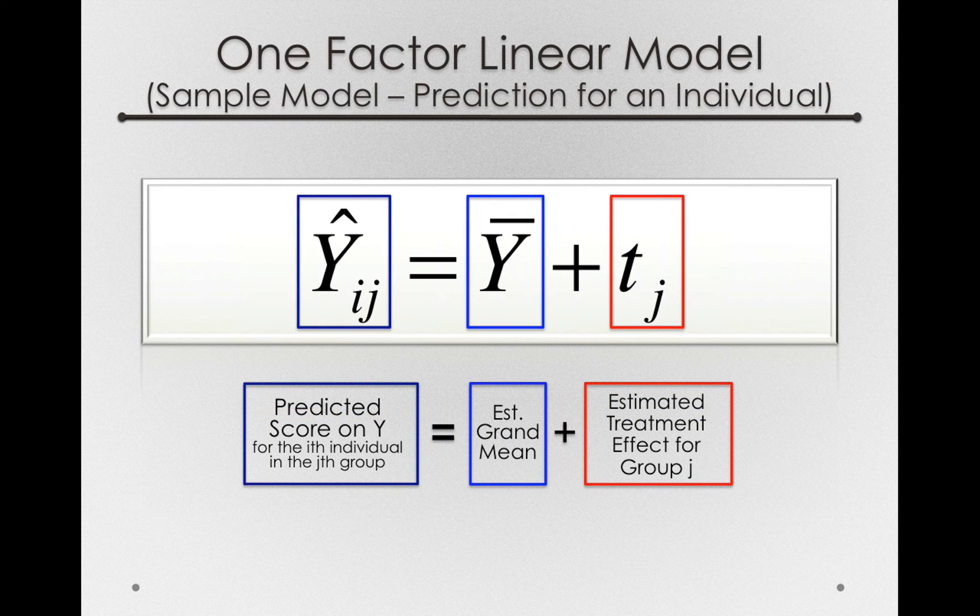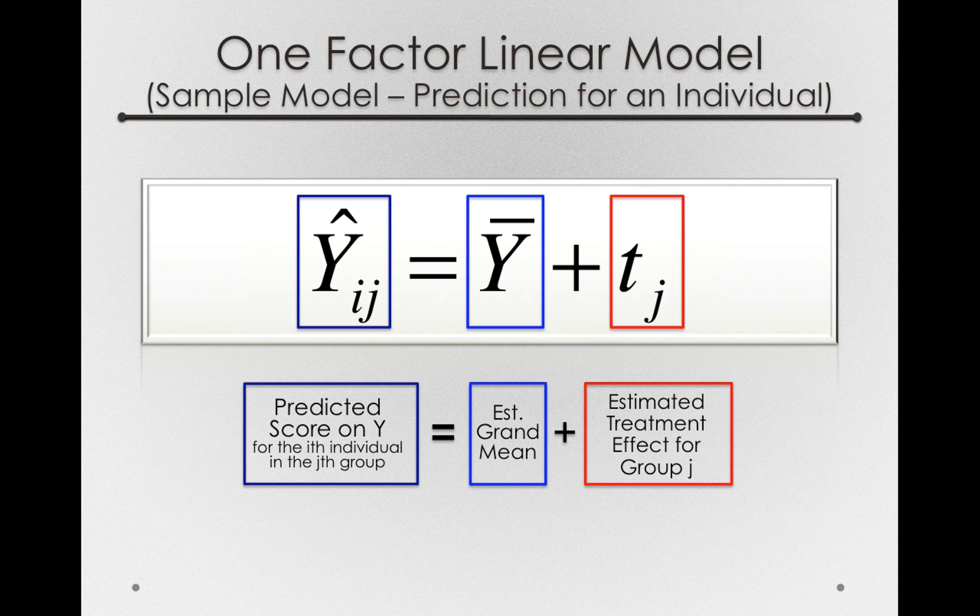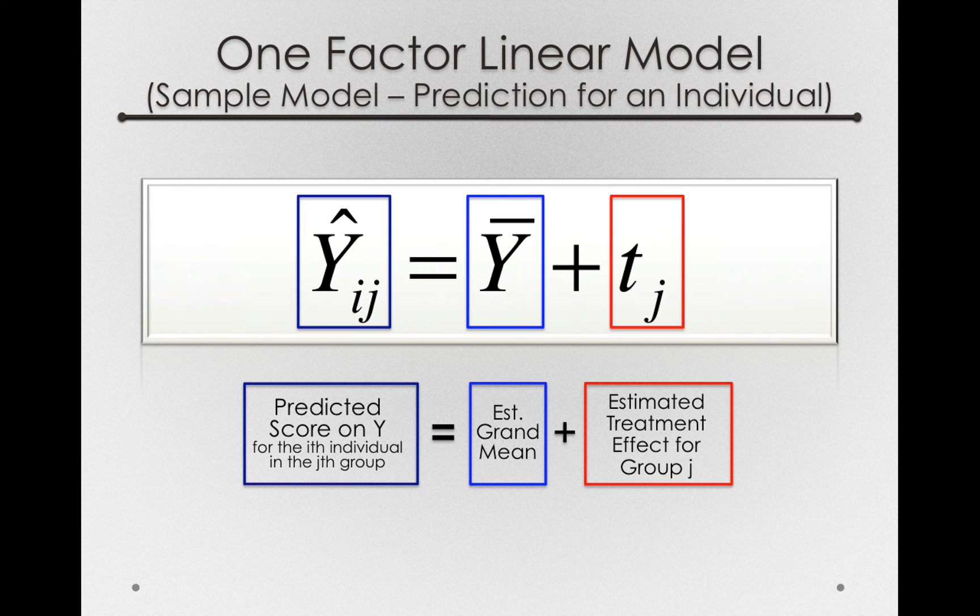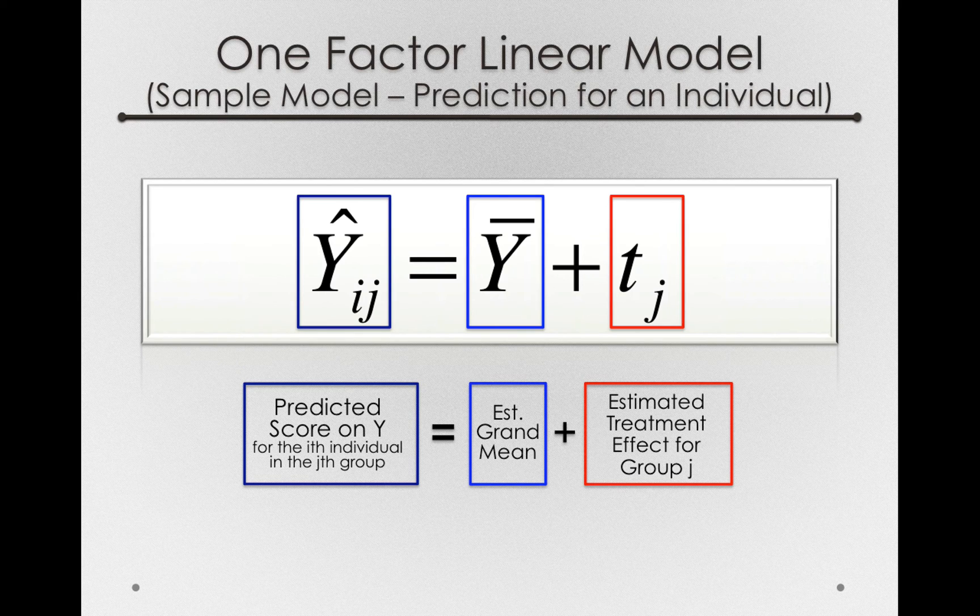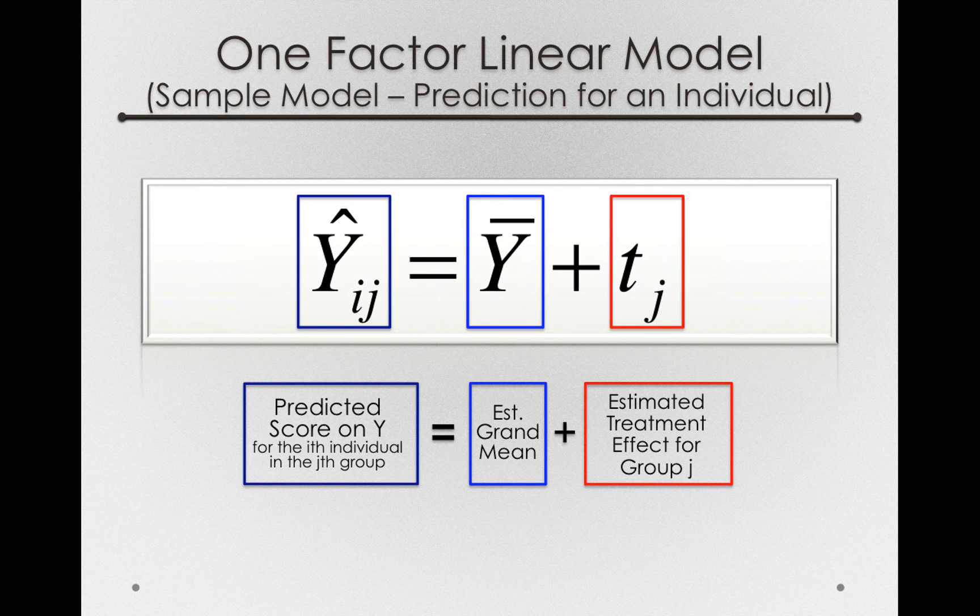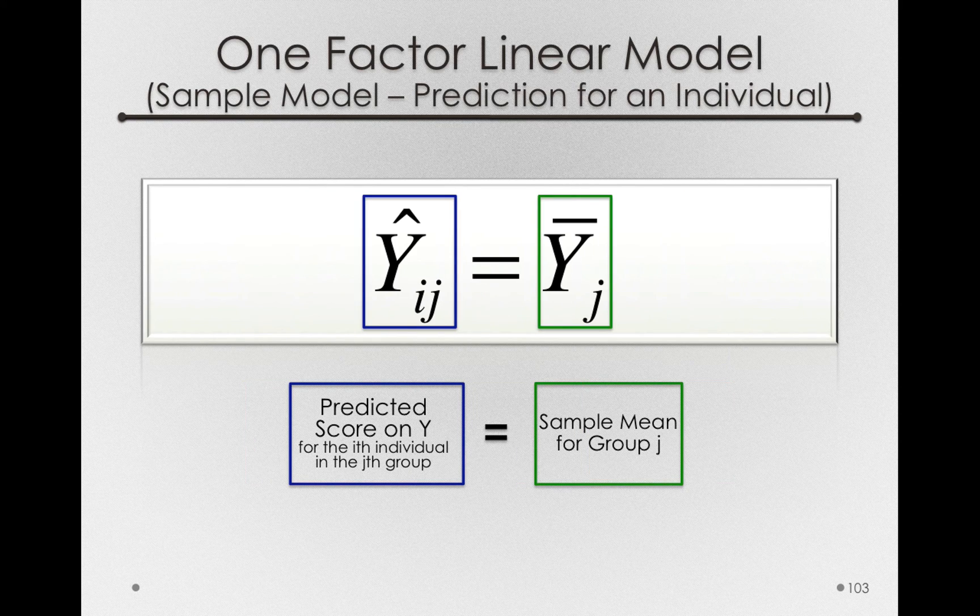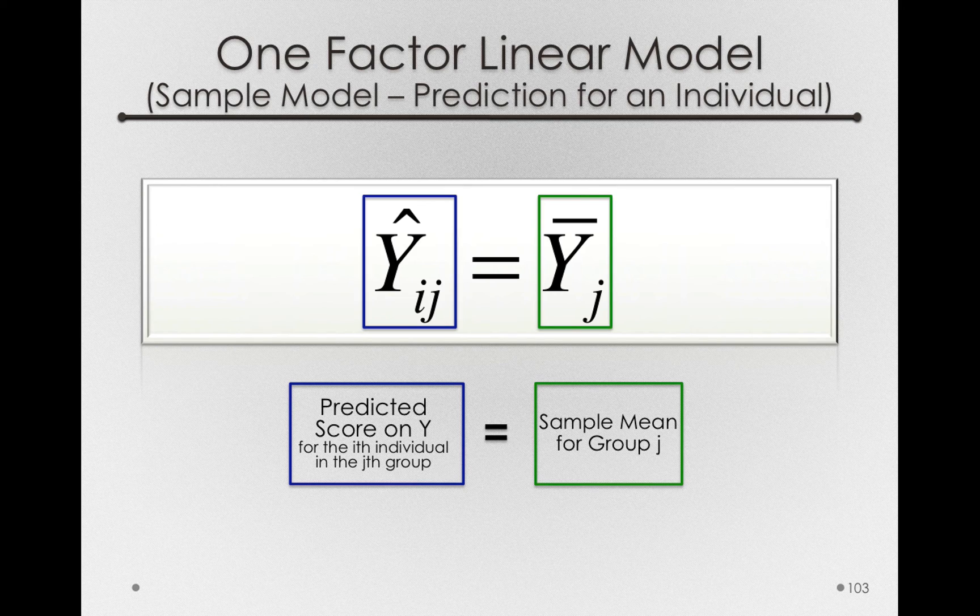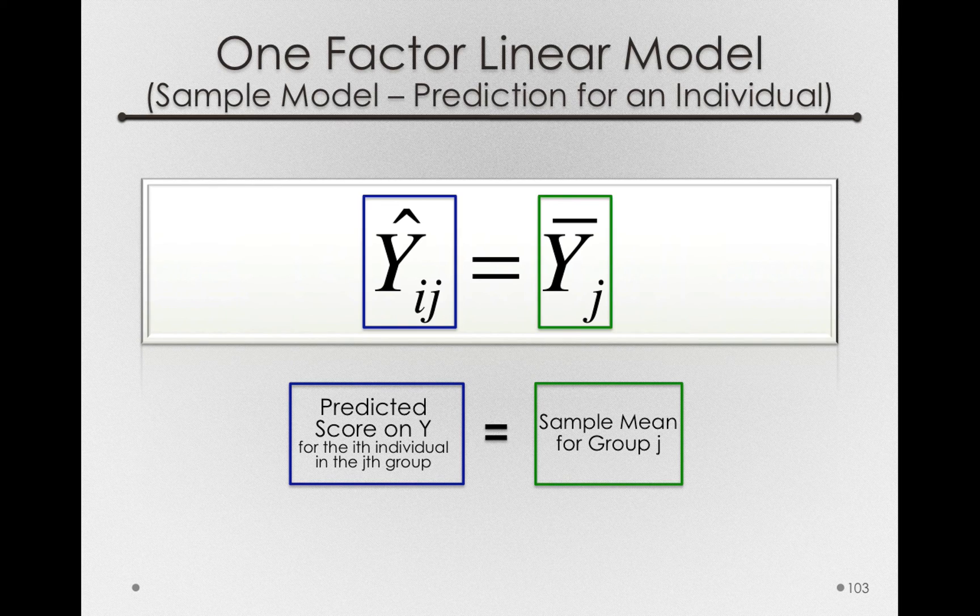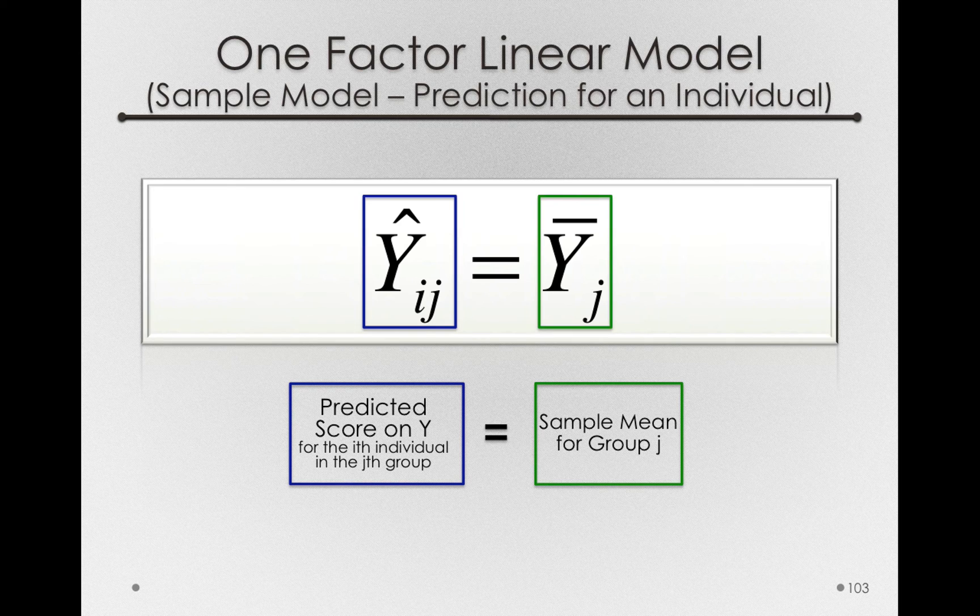So the Y hat ij also has a definition. The Y hat ij, the predicted score on Y for the i-th individual in the j-th group, is simply the grand mean plus the treatment offset for that group. Notice that this is almost our complete model, but we don't have the individual error. Once we remove error from the model, we're simply making a prediction for an individual. And that simply is their group mean. So notice that everything on the right hand side here is really just the sample mean for the group j, which we can represent as the Y-bar j.